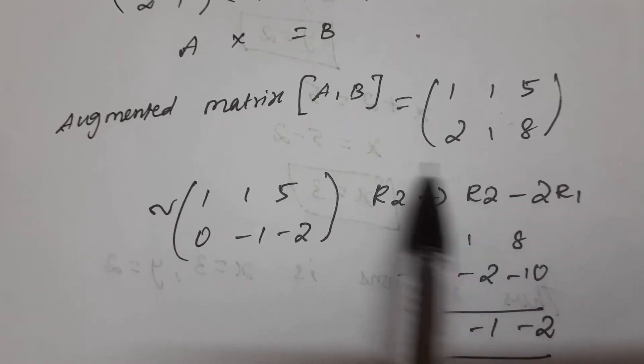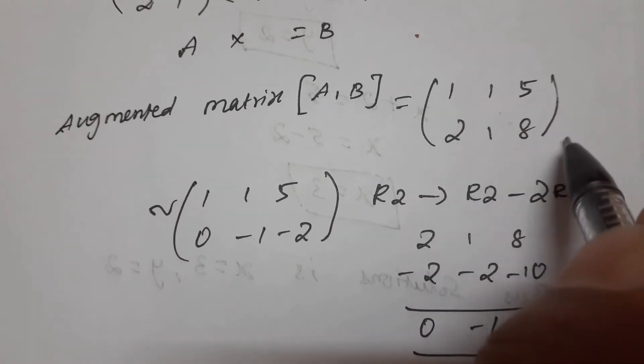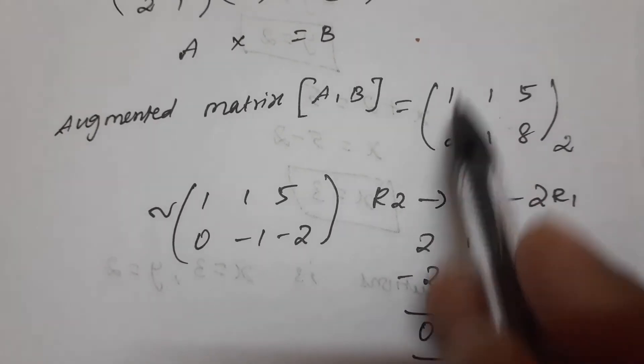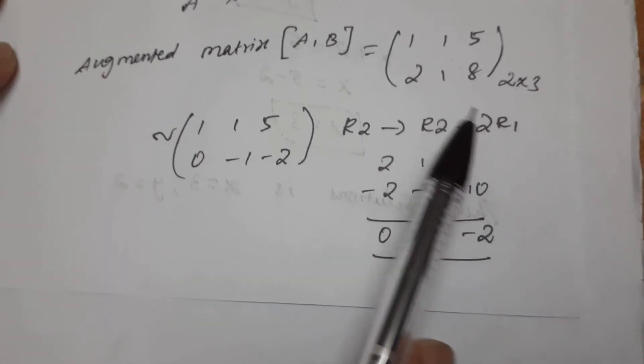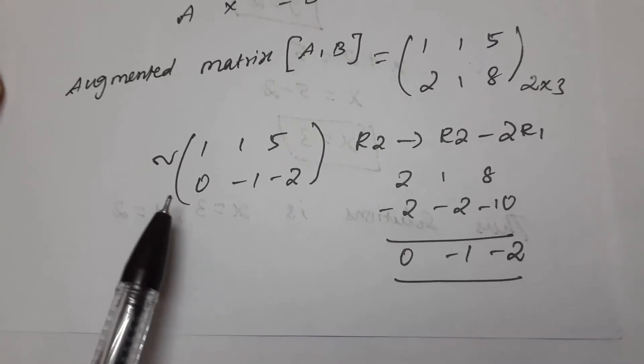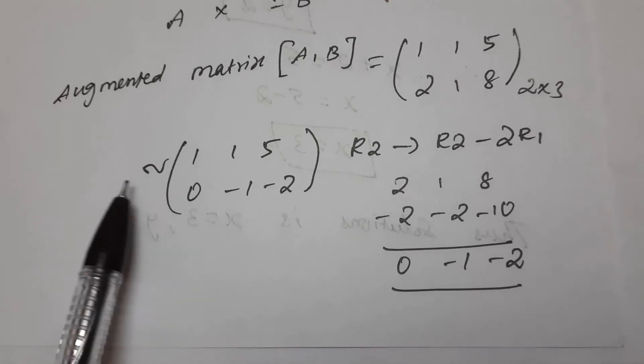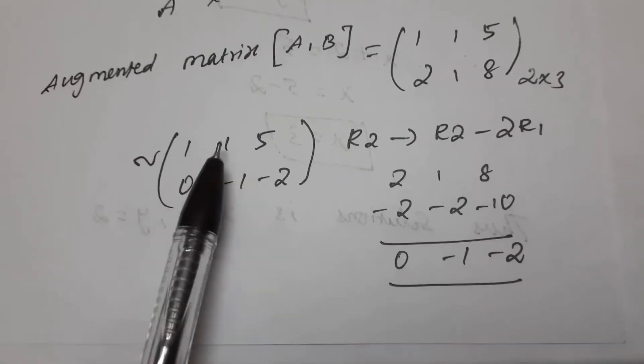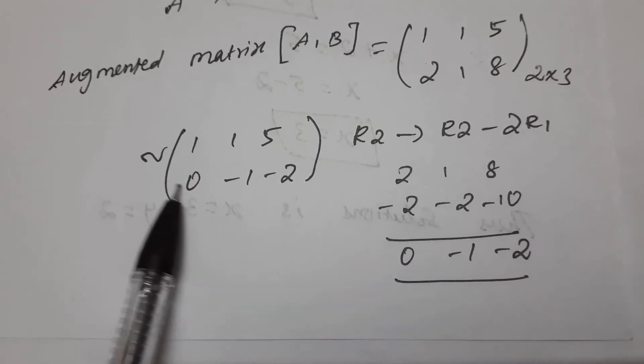Now we'll convert to equivalent form or triangular form. This form is very simple. First row is 1 1 5. Second row will be 0. R2 tends to R2 minus 2R1.